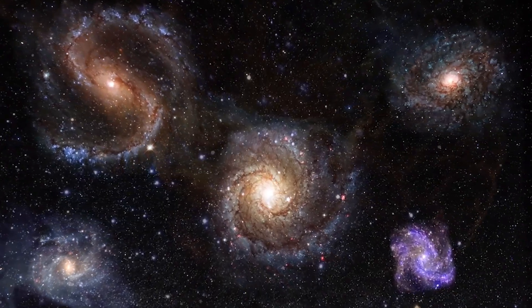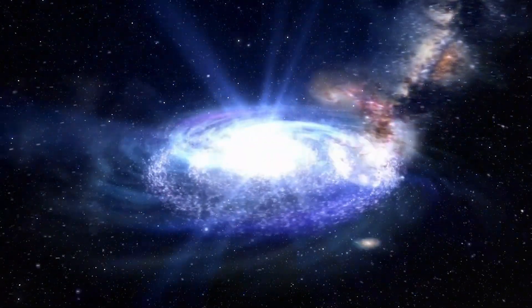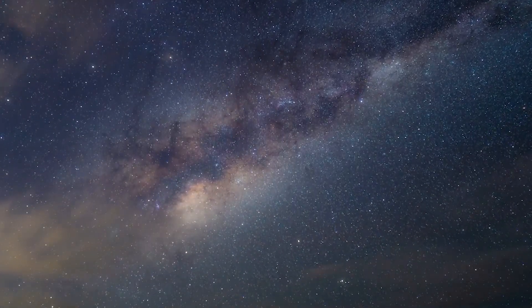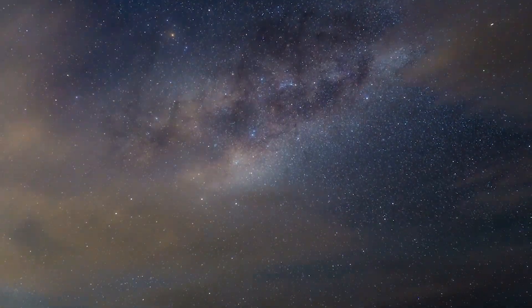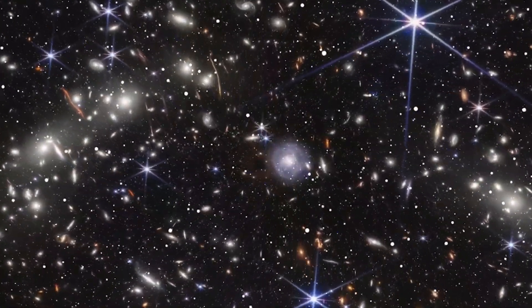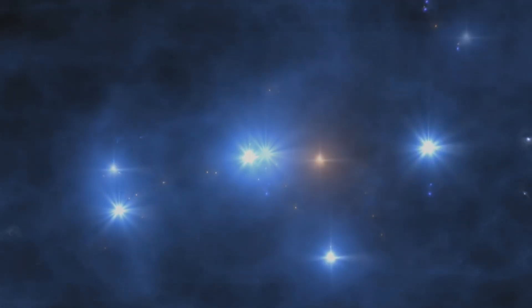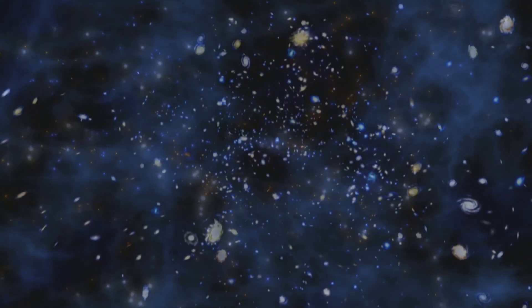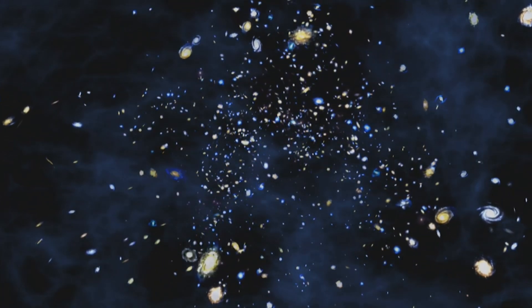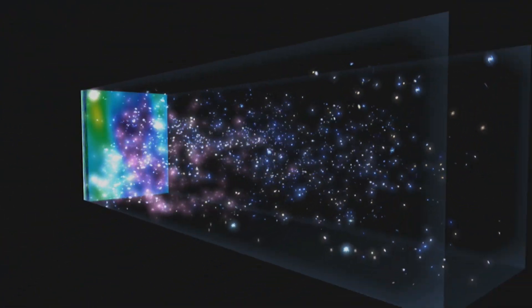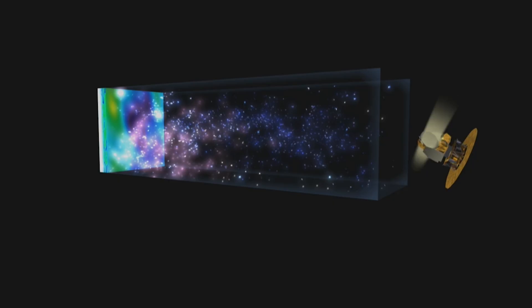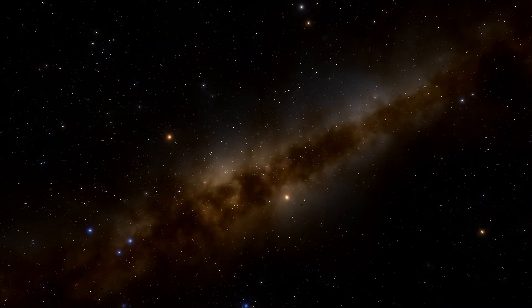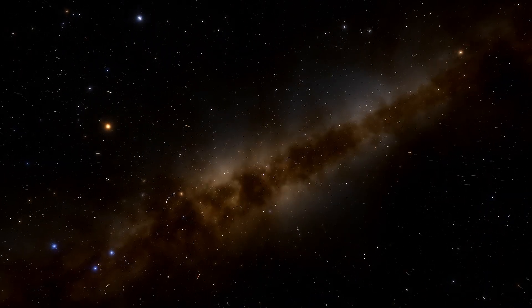But there's more. Webb's data also hints that the fabric of space may not expand uniformly. Certain regions show anomalies, tiny differences in how galaxies cluster and how light bends. These irregularities could be the signatures of leftover structure from an earlier cosmic phase, faint imprints of universes past. If confirmed, it would mean we are literally surrounded by evidence that reality is cyclical, that we are living in a universe that's been reborn countless times, each iteration leaving faint echoes in the next.